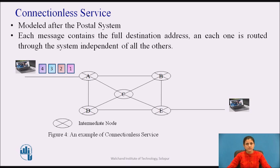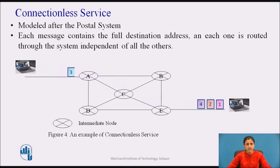Layers can offer two different types of services to the layers above them: connection-oriented and connectionless. Connectionless service is modeled after the postal system. Each message carries the full destination address and each one is routed through the intermediate nodes independently of all subsequent messages. Normally, when two messages are sent to the same destination, the first one sent will be the first one to arrive. However, it is possible that the first one sent can be delayed so that the second one arrives first.